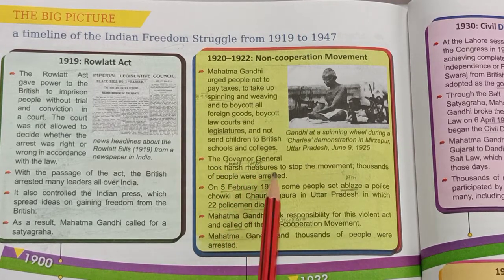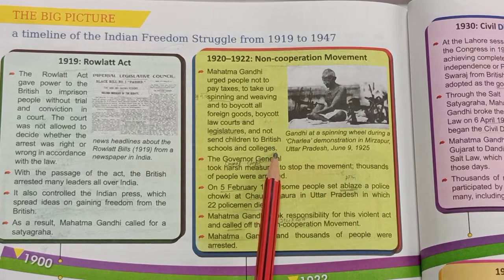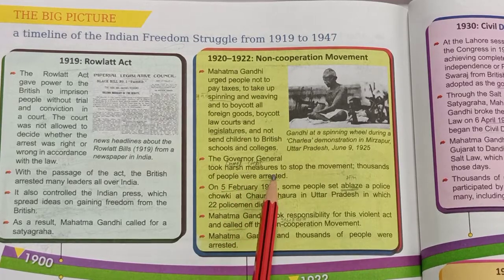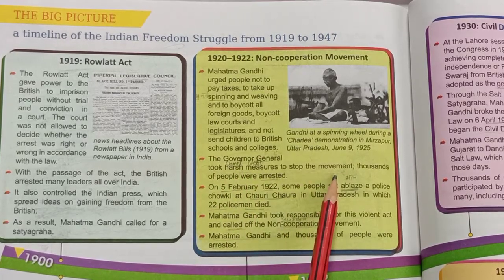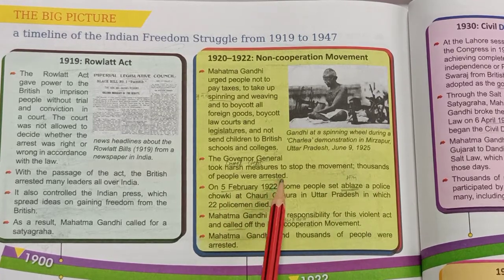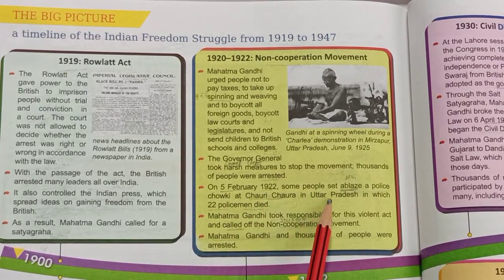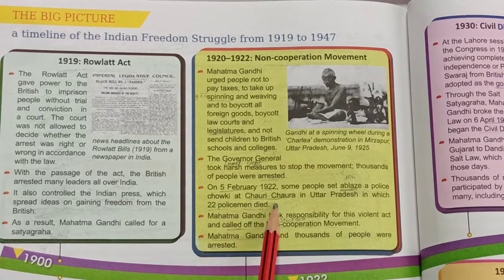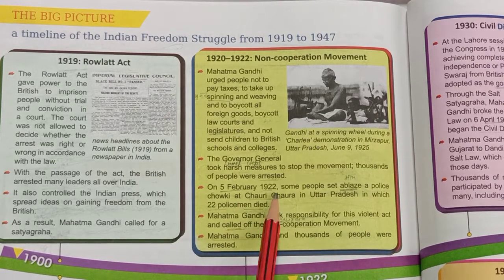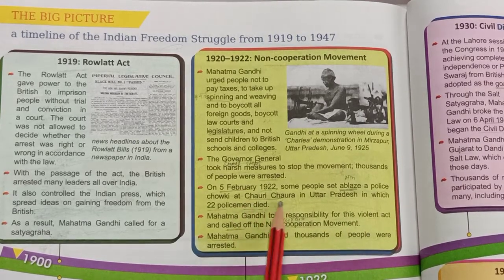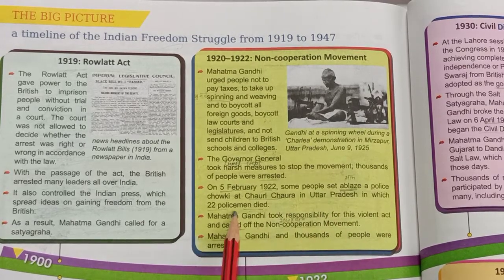The Governor General took harsh measures to stop the movement. Thousands of people were arrested. On 5 February 1922, some people set ablaze a police chowki at Chauri Chaura in Uttar Pradesh, in which 22 policemen died.